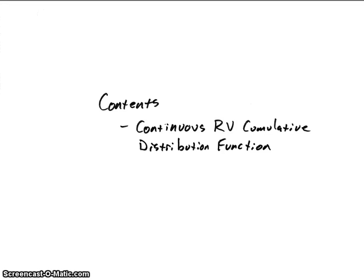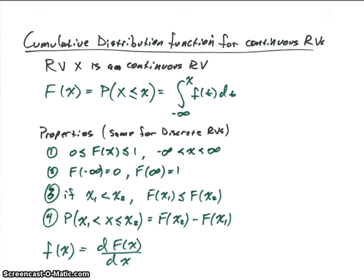In this video we're going to look at the cumulative distribution function for continuous random variables. The definition for the cumulative distribution function for continuous random variables is exactly the same as we've had before — that really isn't any different. How we calculate it for a continuous random variable is different than what we've seen for a discrete random variable.